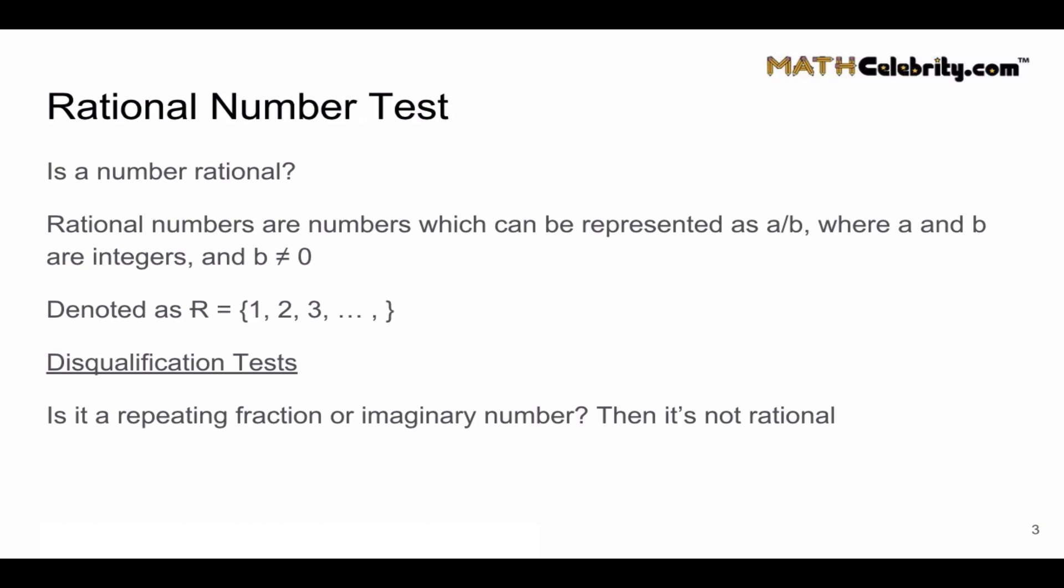Now let's talk about disqualification tests. Is it a repeating fraction or an imaginary number? Then it's not rational. So those are some quick checks like the number i, which is the square root of negative one, that you can perform to move quickly and say this number is not rational.